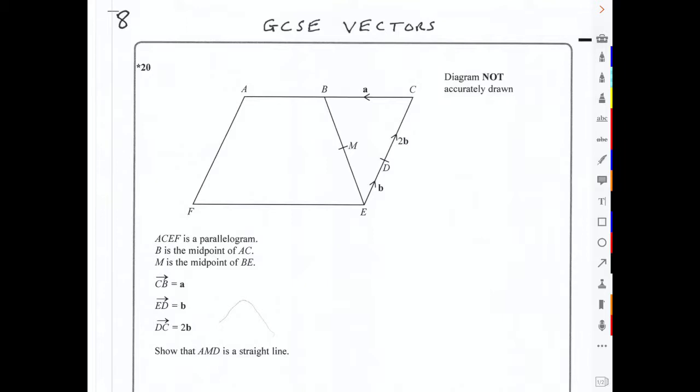GCSE Vectors, Question 8. ACEF is a parallelogram. B is the midpoint of AC. M is the midpoint of BE. CB is the vector little a, ED is the vector little b, and DC is 2 times the vector little b. Show that AMD is a straight line.